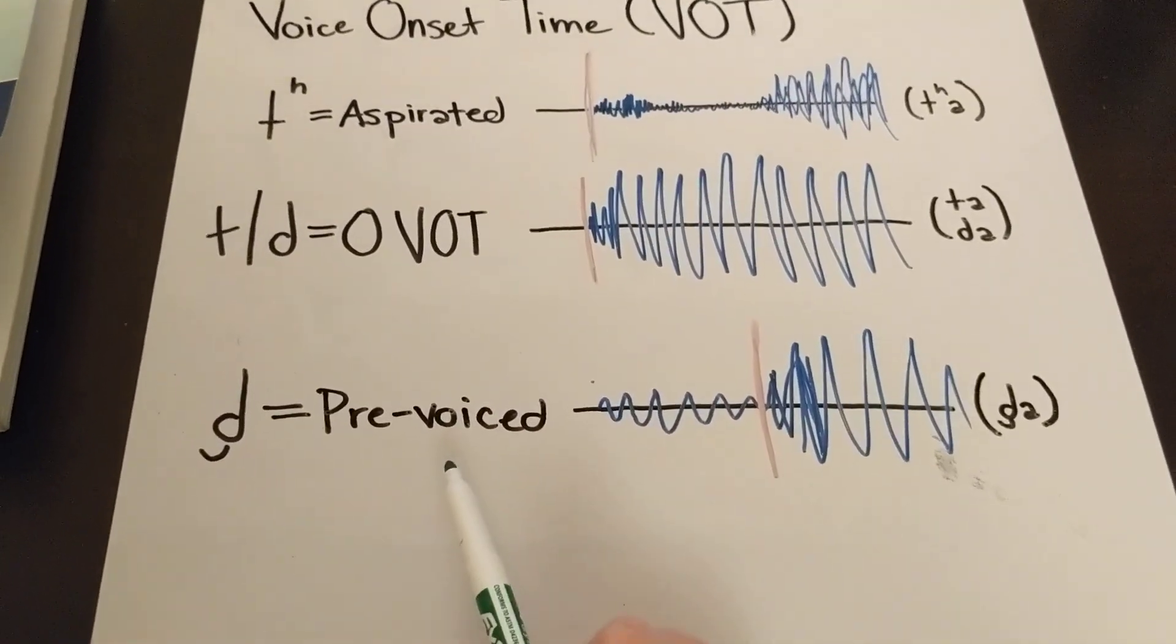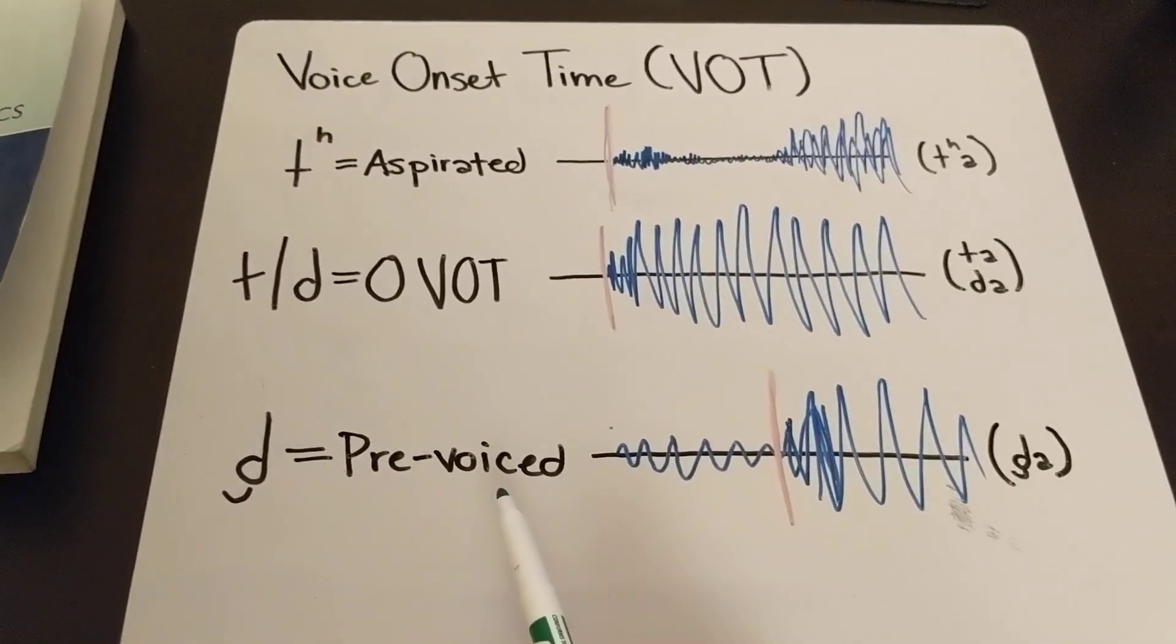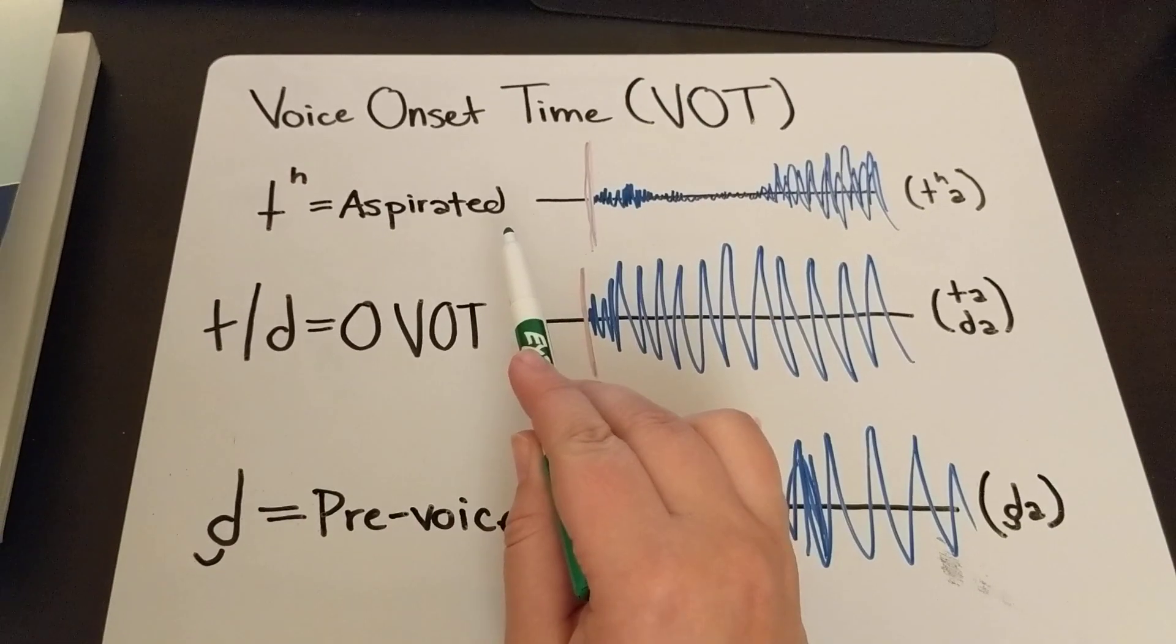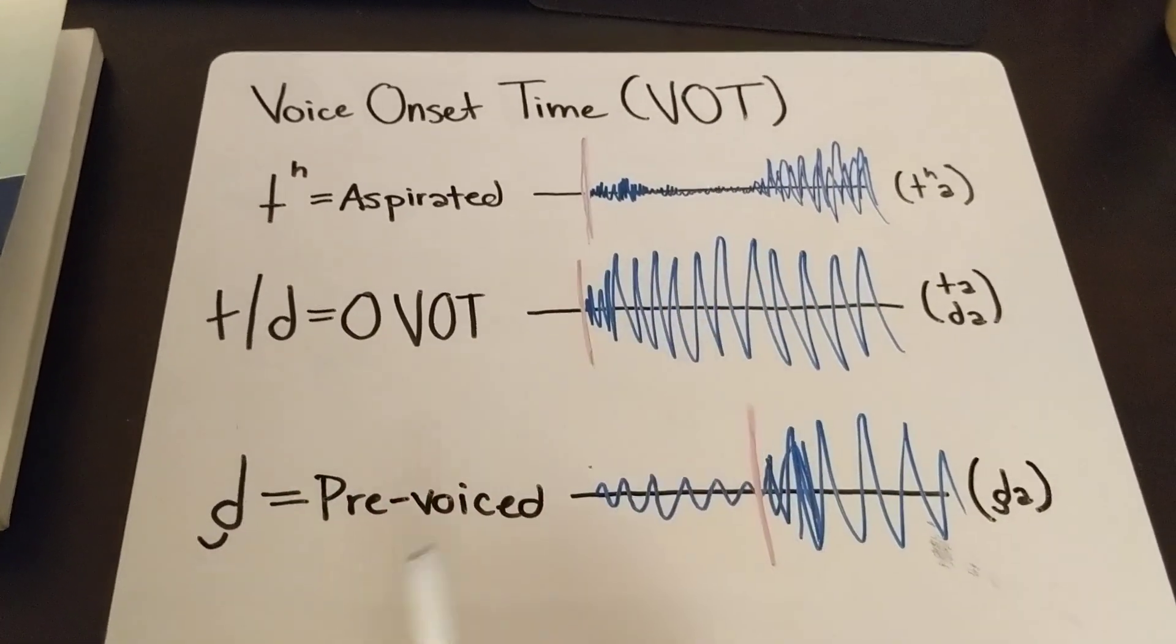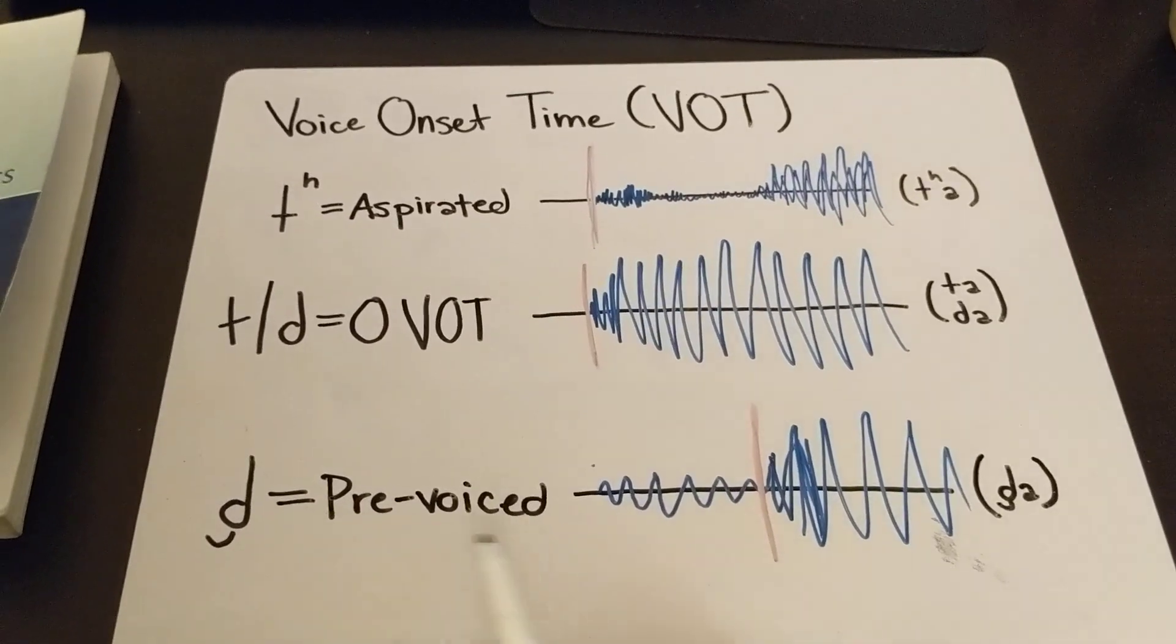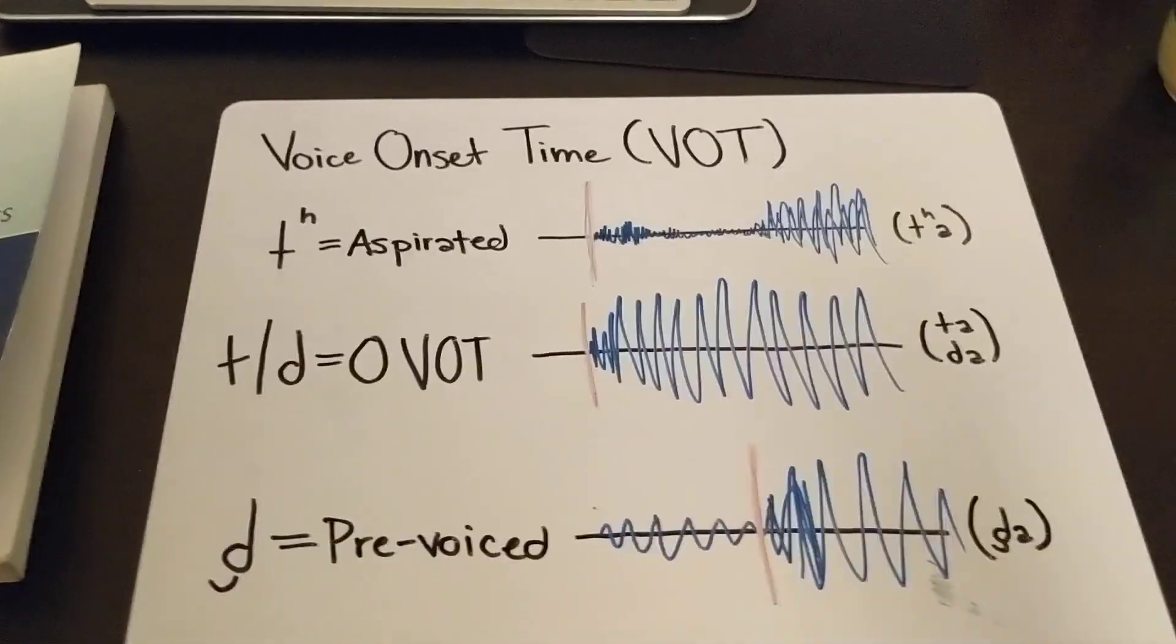And at the other end you have things that are called pre-voiced, and these have a negative voice onset time. Now, in an aspirated stop, the voicing starts way after the stop is released, and in a pre-voiced stop, it starts even before you release the stop.